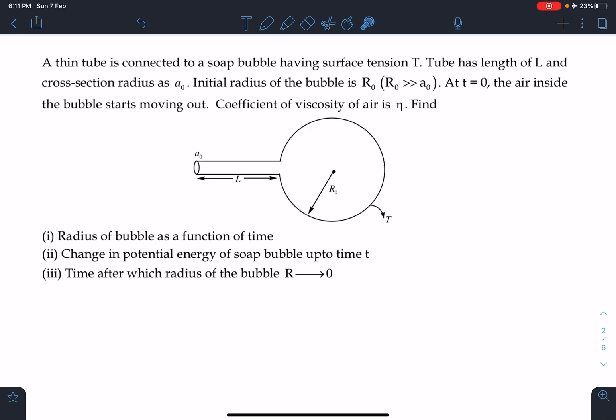At t=0, the air inside the bubble starts moving out and the coefficient of viscosity of air is given as η. Then we have to find the radius of bubble as a function of time.